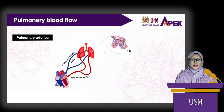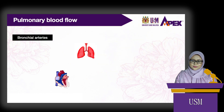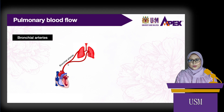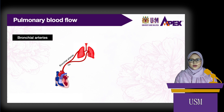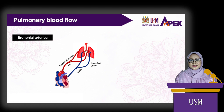Another blood supply of the lungs is from the bronchial arteries, which come from the thoracic aorta. It carries oxygenated blood to the supporting tissues of the lungs. The bronchial veins carry deoxygenated blood from the lung tissues to the pulmonary veins and to the left atrium of the heart. So this blood bypasses the alveoli. This is called physiological shunt.